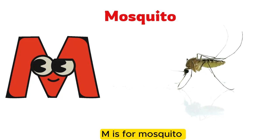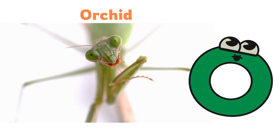M is for Mosquito. M, M, M, M, Mosquito. N is for Necris. N, N, N, N, Necris.